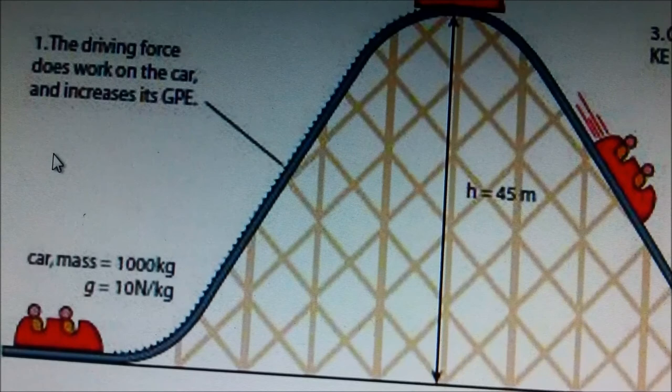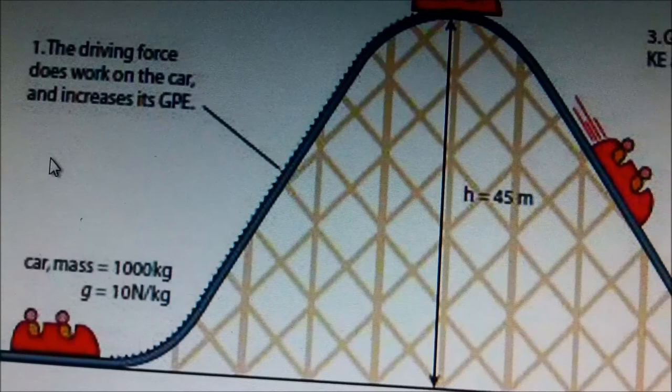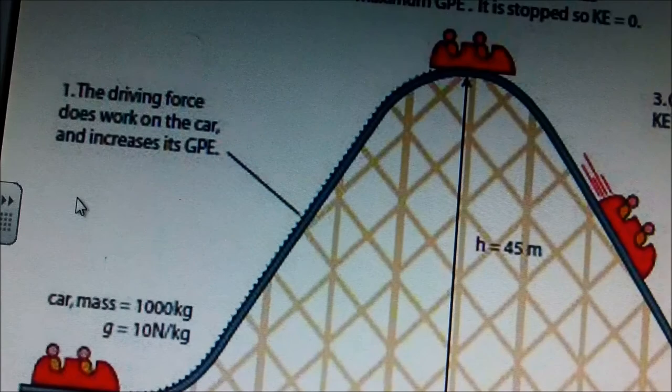In this situation, we assume that there's no air resistance, so that all energy is directly transferred from GPE to KE. But in real life, energy is lost. It's dissipated to the surroundings.